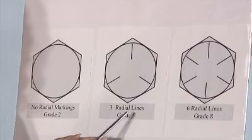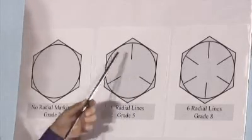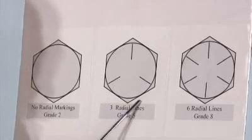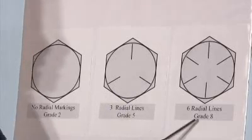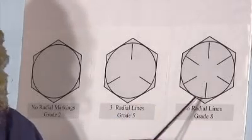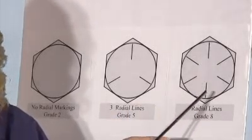When you're talking about a grade 5, you always want to see three radial slashes on the top of the head. That mark is a grade 5. When you're talking about a grade 8, you always want to see six radial slashes on the top of the head. That mark is a grade 8.